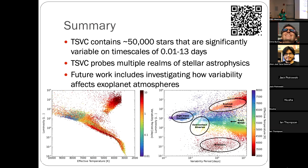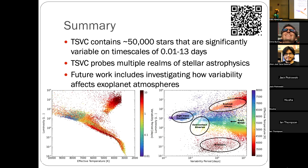To wrap up: we produced the TESS Stellar Variability Catalog of 50,000 stars deemed significantly variable on timescales of 0.01 to 13 days. As shown through the period-luminosity diagram, this catalog probes many different realms of stellar astrophysics. You can play with the data at filtergraph.com/tess-variability or scan the QR code to my website for the paper and filtergraph portal link. Next steps include investigating longer-term variability and how variability affects exoplanet atmospheres.